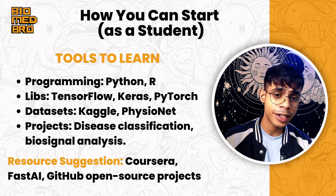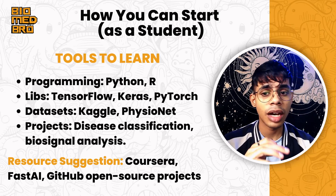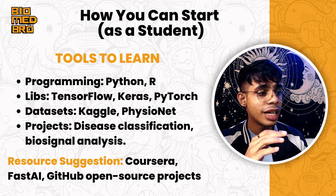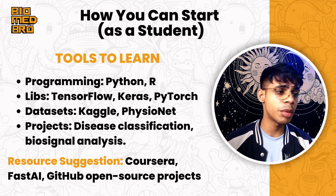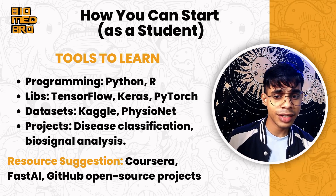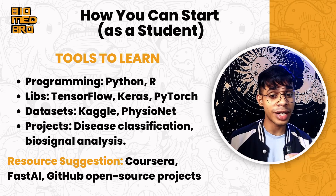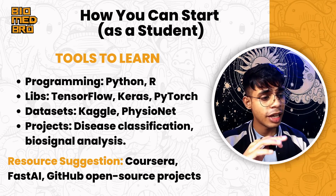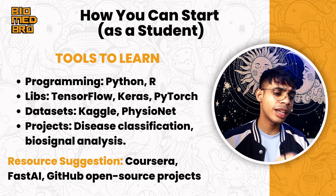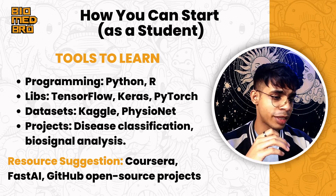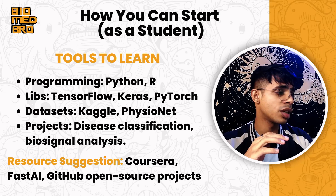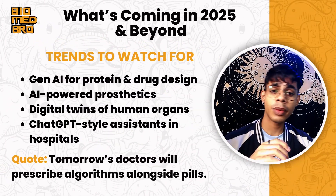How can you start as a student? First, learn a programming language — either Python or R. Then study key libraries: TensorFlow, Keras, and PyTorch are the most important Python libraries for this domain. You should also understand datasets from platforms like Kaggle and UCI, which offer healthcare datasets for training algorithms. Project ideas include disease classification algorithms or biosignal analysis models. To study, refer to Coursera, Fast.ai, and GitHub open-source projects to start your AI journey.